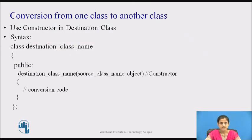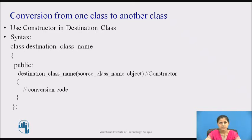Let's see conversion from one class type to another class type. To perform the conversion from one class to another class type, a constructor should be used in the destination class. A single-argument constructor function serves as an instruction for converting the argument's type to the class type of which it is a member. This implies that the argument belongs to the source class and it is passed to the destination class for conversion. This makes it necessary that the conversion constructor be placed in the destination class.